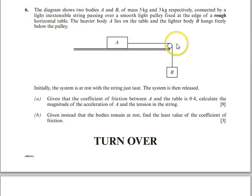They're connected by a light and extensible string over a smooth light fixed pulley at the edge of a rough horizontal table. The heavier body A lies on the table, and the lighter body B hangs freely below the pulley. Initially the system is at rest, with the strings just taught. The system is then released. Given that the coefficient of friction between A and the table is 0.4, calculate the magnitude of the acceleration of A and the tension in the string.